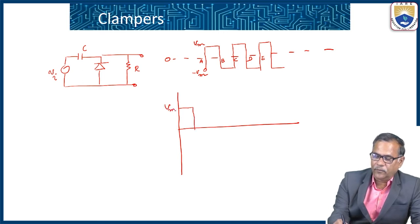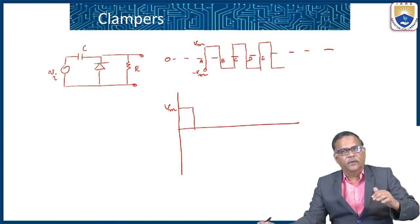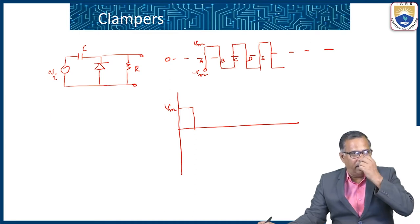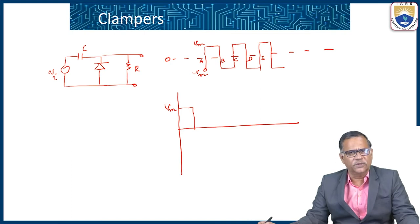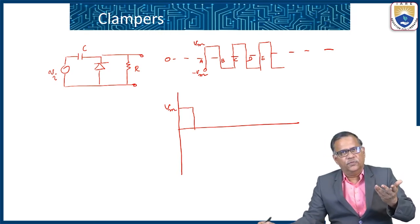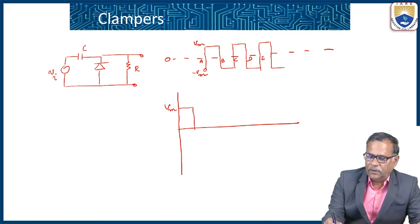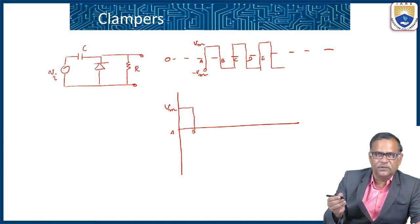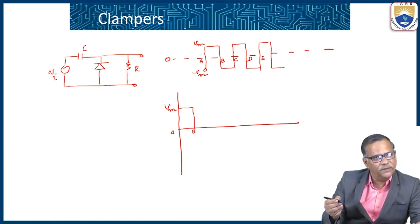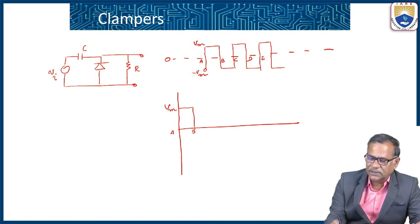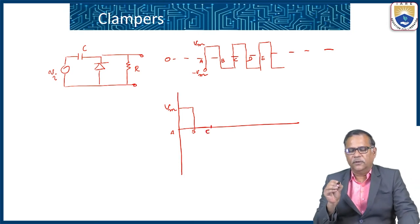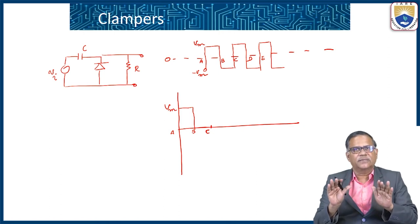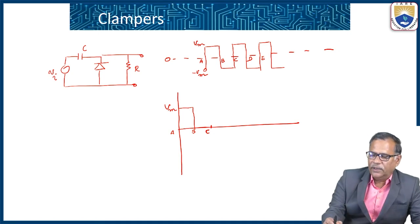Initially the output is Vm. At point B when the voltage becomes negative, the cathode receives negative voltage and the anode is positive with respect to the cathode, so the diode is forward biased and the capacitor quickly charges to Vm. From B to C, the diode is in forward bias, it acts as a short circuit, and the output voltage is 0. Between B and C, the capacitor charges to Vm.